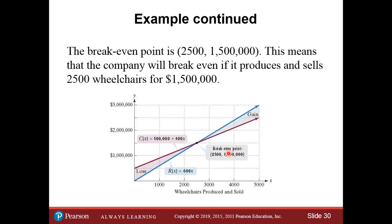Looking at the graph, the break-even point is where the revenue line and the cost line intersect. If we sell fewer than 2,500 wheelchairs, we're operating at a loss — the shaded region represents lost money. If we sell more than 2,500, we're in profit. The vertical difference between revenue and cost is our profit — positive above the break-even point, negative below it. Profit equals revenue minus cost.